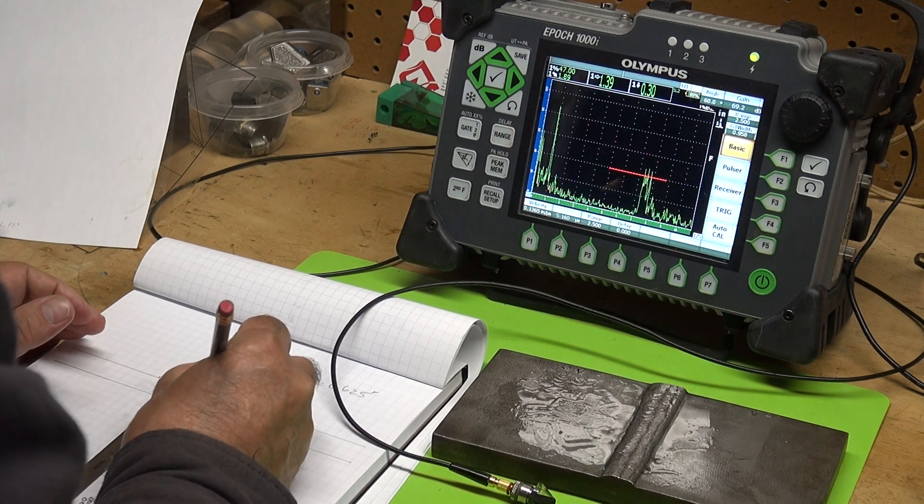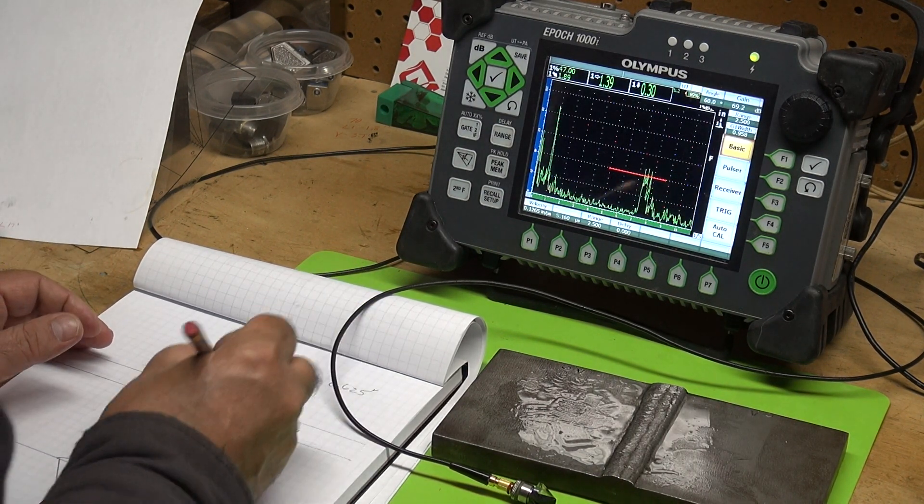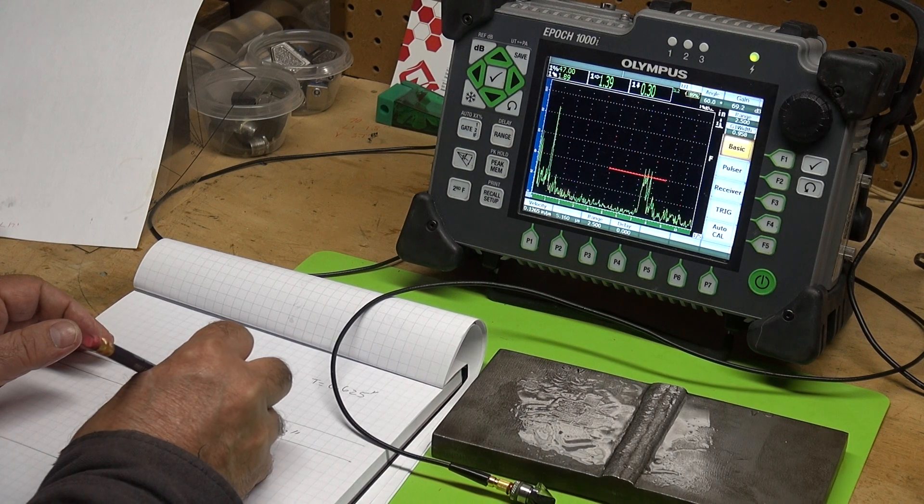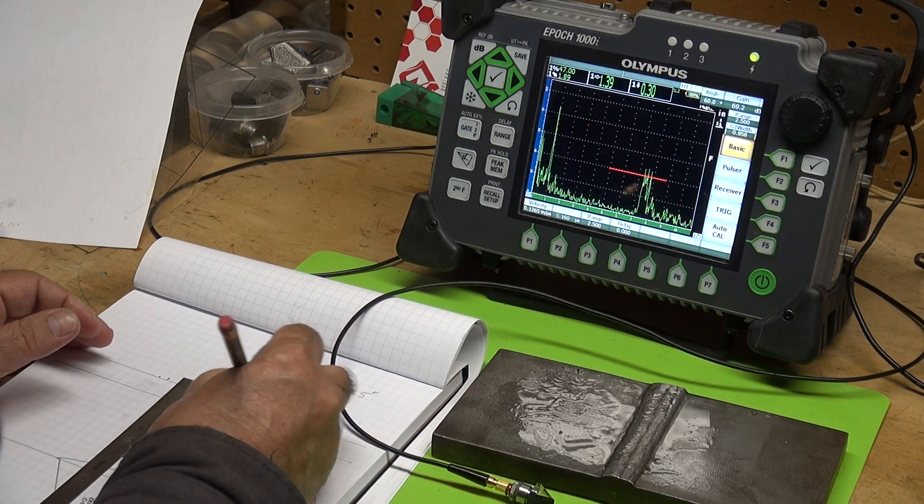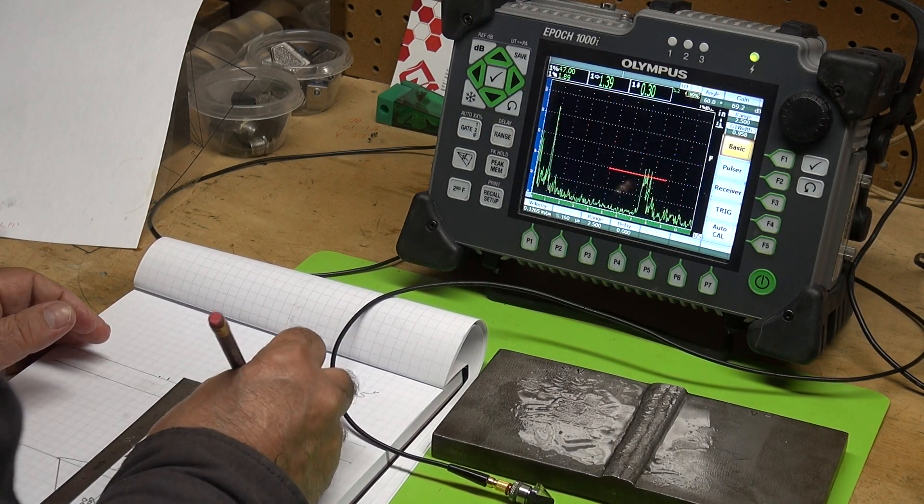So it shows that my porosity is kind of in this area right here. The top one I just looked at is at a depth of 0.3 inches.